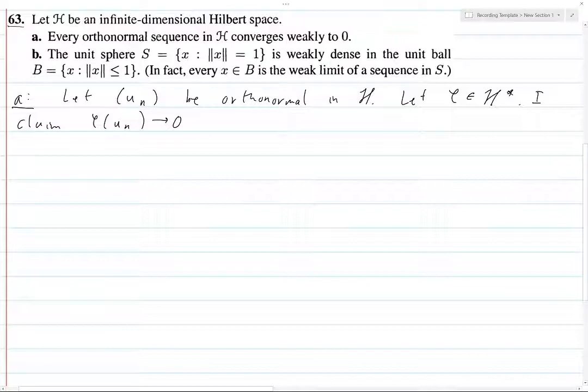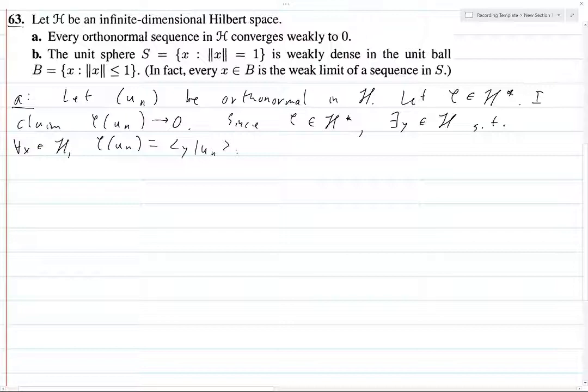Phi of u_n converges to the number zero, because a functional takes in a value in the Hilbert space and gives you a scalar. So since phi is in H star, we know that there is some y in H such that for all x in H, phi of u_n is equal to the inner product of y with u_n. In this notation, this is a little bit non-standard, but it's kind of nice. The bar means that this is a sesquilinear form, it's a Hilbert space inner product.